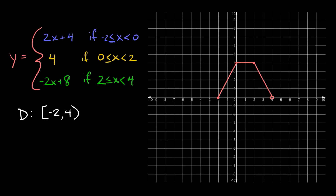Now lastly, the range. The range, on the other hand, goes up and down — it's our vertical limits. The highest part on this graph would be right here at y equals four. And the lowest limit on any part of our graph would be right here at y equals zero.